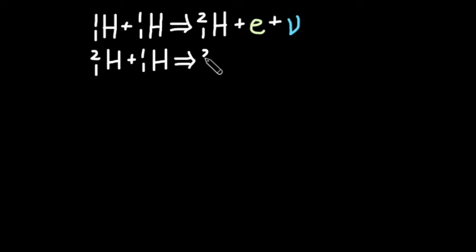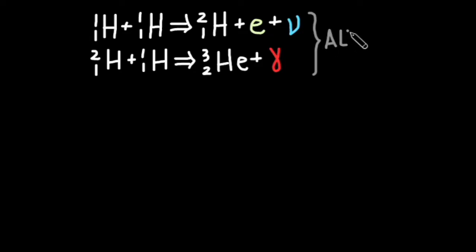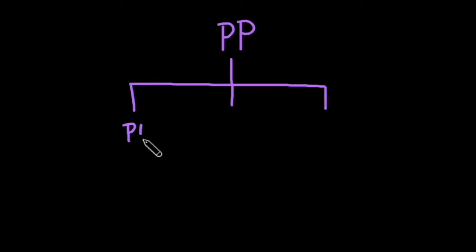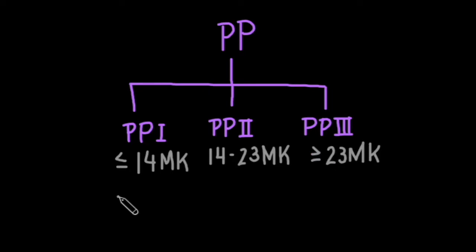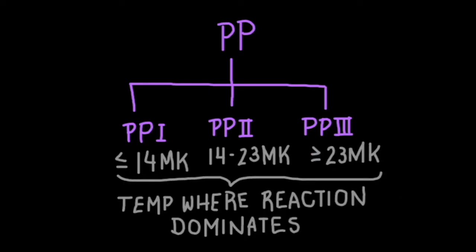Next, the deuterium will quickly capture another proton to form helium-3. This second step always happens in a PP reaction. After these first two steps, there are a few different avenues the reaction may take, aptly named PP1, PP2, and PP3. We're not going to go over every possible reaction, but I will go over one possible reaction so that you can see a full example of how this fusion may occur.